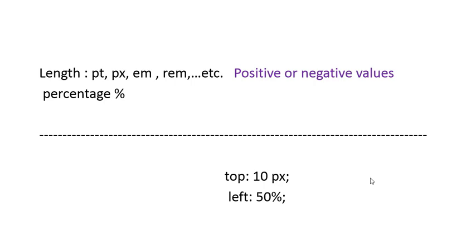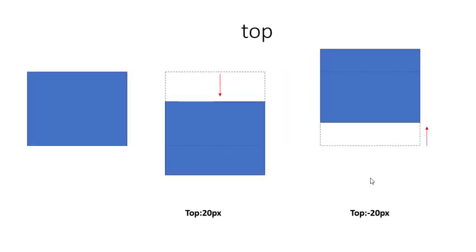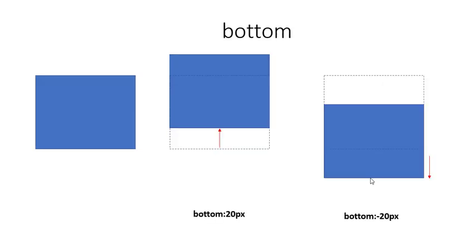The offset properties work exactly as their names tell you. The top property, for example, moves the element from the top by the given value — here in the example it moves the element from top by 20 pixels. The negative value does the opposite: it moves the element backward from the bottom by 20 pixels. The rest of the properties such as left, right, and bottom work the same. The bottom property, for example, moves the element from the bottom by the given value, and the negative value does the opposite.